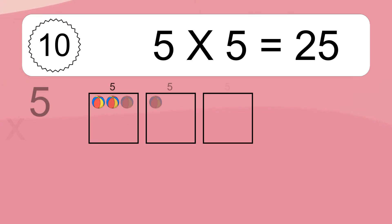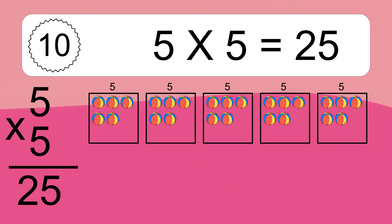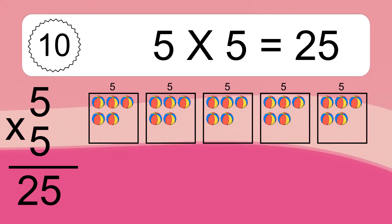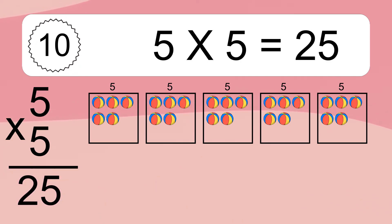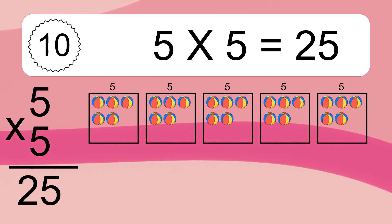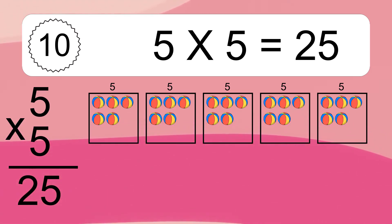5 times 5 equals 25. We have 5 boxes and each box has 5 colorful balls inside. If you count all the balls in all the boxes together, you will have 5 times 5 balls. This equals 25 balls.